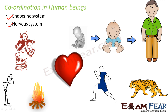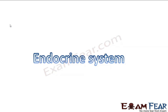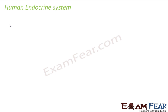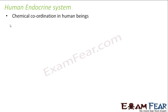The endocrine system and nervous system together take care of control and coordination in human beings. We will now talk about the endocrine system, which covers chemical coordination in human beings. There are some chemicals produced inside the body of human beings, and those chemicals actually help to coordinate between many organs.